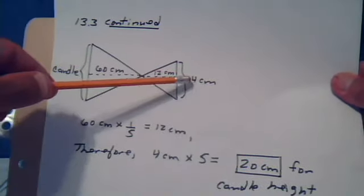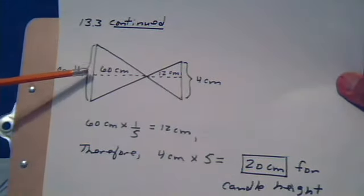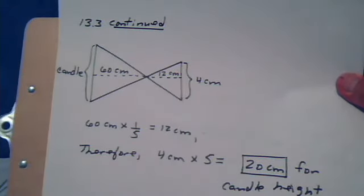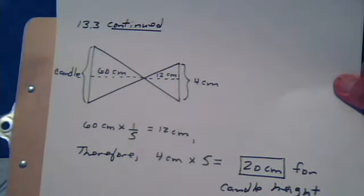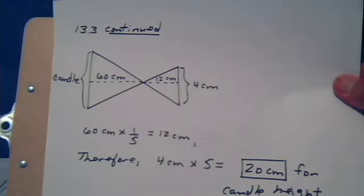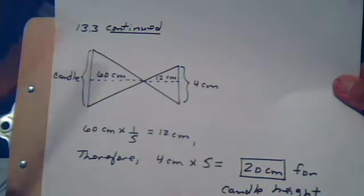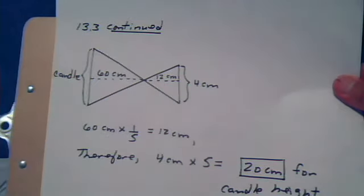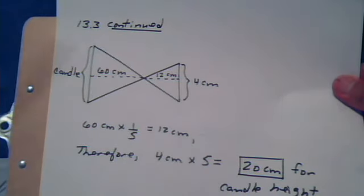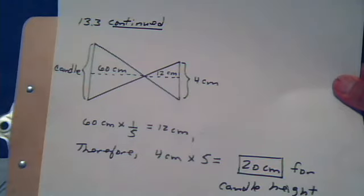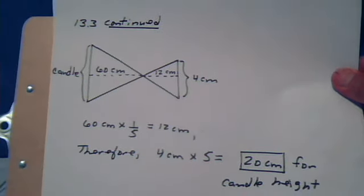So how does the 4 become this length? What would I have to multiply it by? Well, you multiply it by the factor that gets you from 12 to 60. How do you get from 12 to 60? You multiply times 5. So you multiply this 4 times 5, and that would be the length of the candle: 20 centimeters.